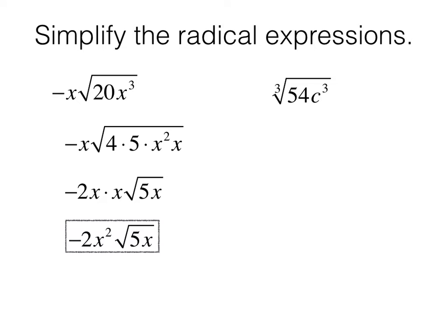In the next example, we have cube root. So we want to think about rewriting 54 as some perfect cube times something else. So 27 times 2 would work. Let's take the cube root of 27, and that'll be 3. We'll take the cube root of c to the 3rd power, and that'll be c. What's left over is the cube root of 2.